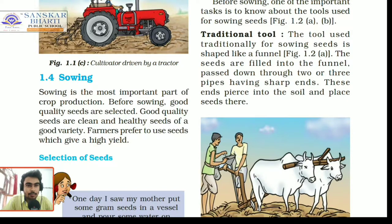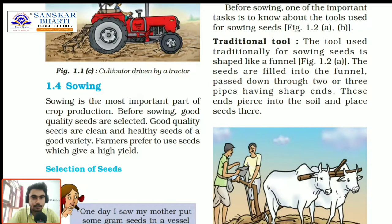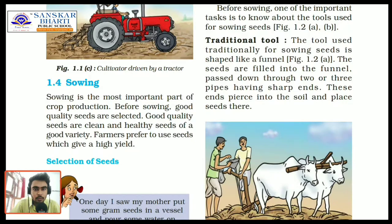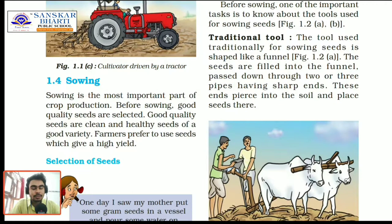To select healthy and clean seeds for sowing, we use a method where we put the seeds into water. Healthy seeds settle down whereas hollow or unhealthy seeds float on the surface. This is the traditional method for separating healthy seeds from diseased ones.